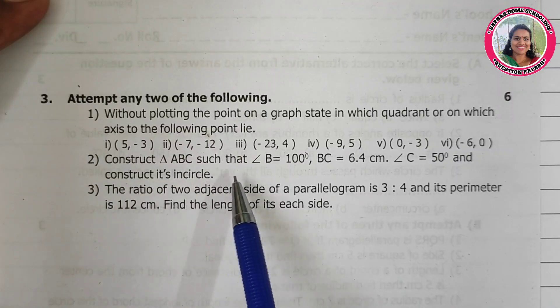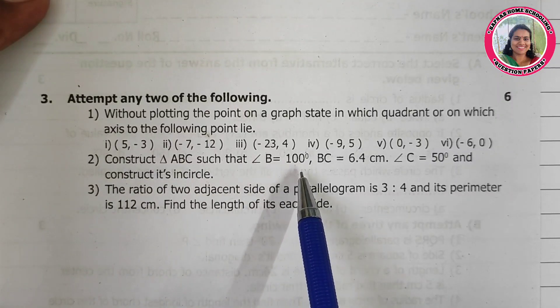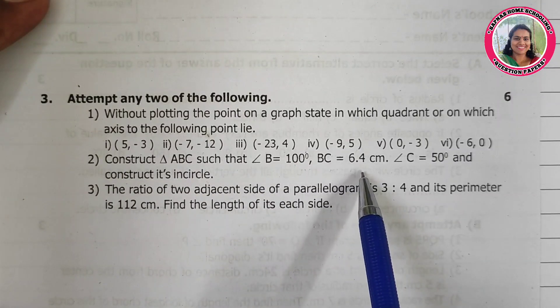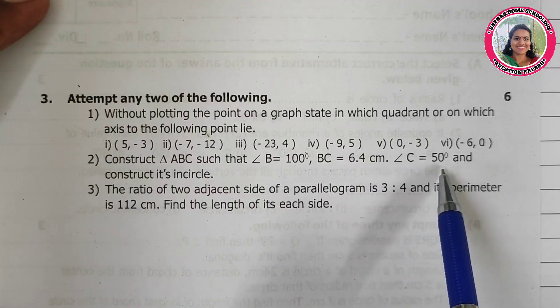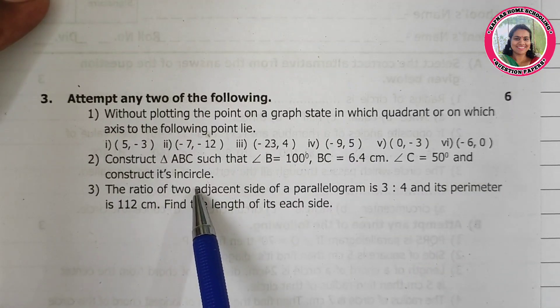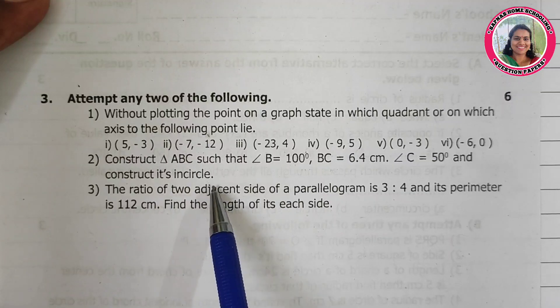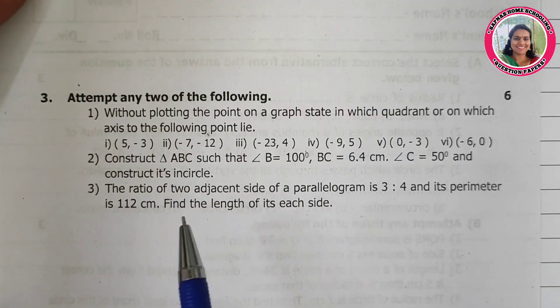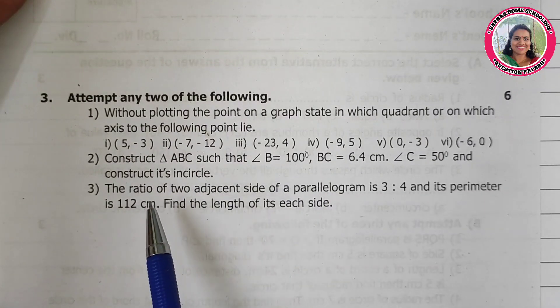Construct triangle ABC such that angle B is equal to 100 degrees, BC is equal to 6.4 cm, angle C is equal to 50 degrees. Then construct its incircle. So you have to construct a triangle and then the incircle.